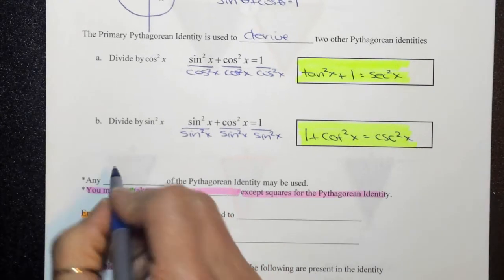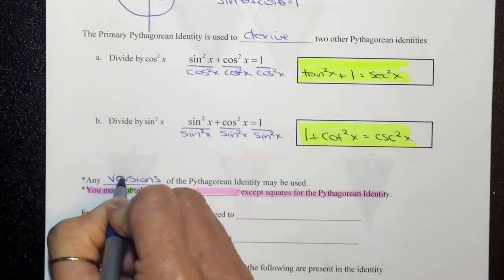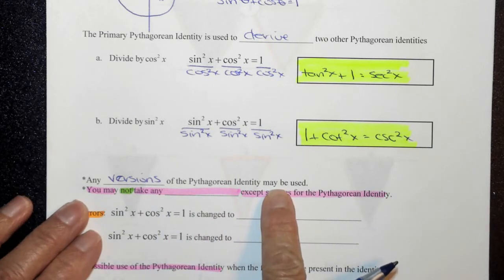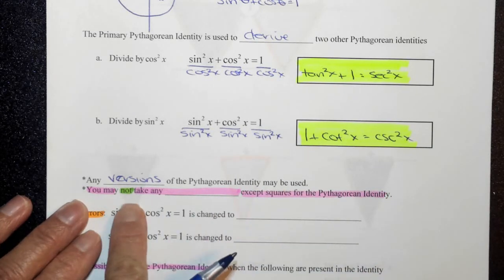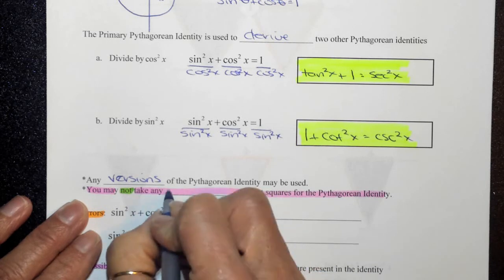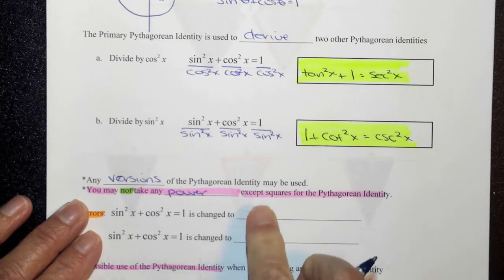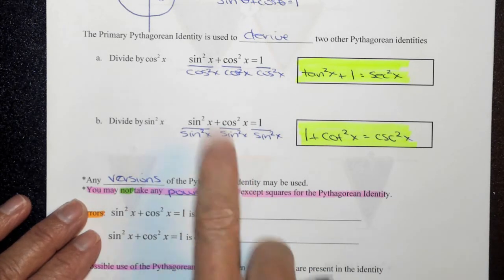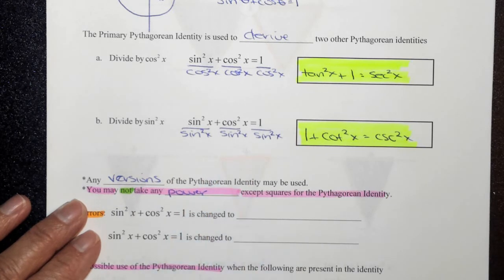So any of the versions of the Pythagorean identity can be used. However, what you need to know is that you may not take any power except for squares. So in the two previous identities, I showed you that you could use any variation. Here, this is only when the trig functions are squared.